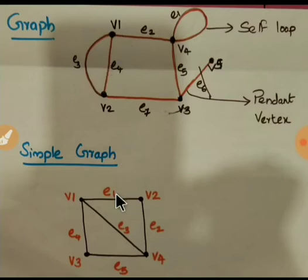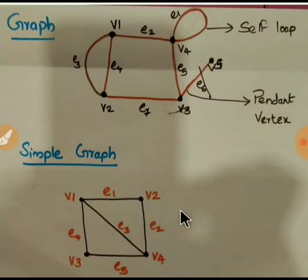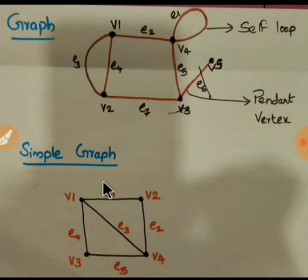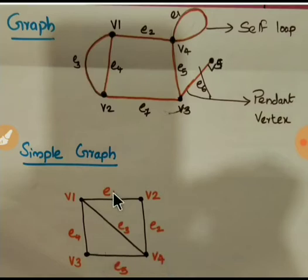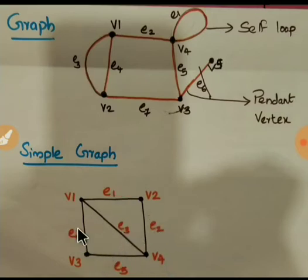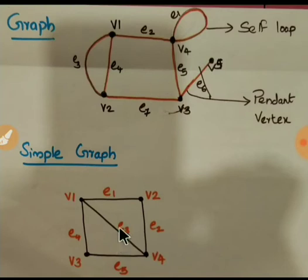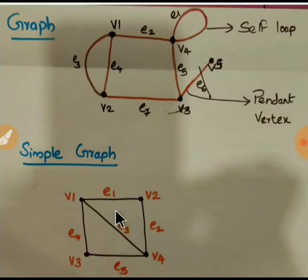In the picture below you can see a simple graph. A simple graph has vertices V1, V2, V3 and V4 and edges E1, E2, E3, E4 and E5. But as in the first graph, there is no parallel edge or self-loop. So a simple graph is a graph in which there is no parallel edge or self-loop.